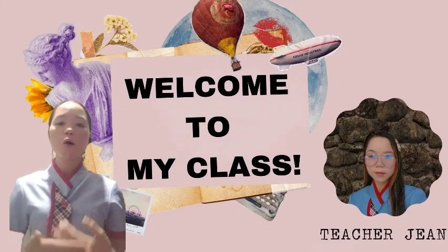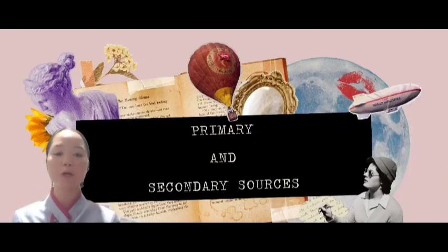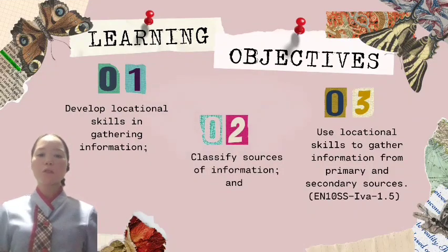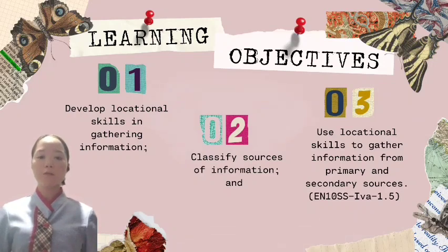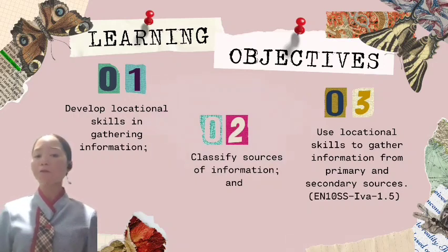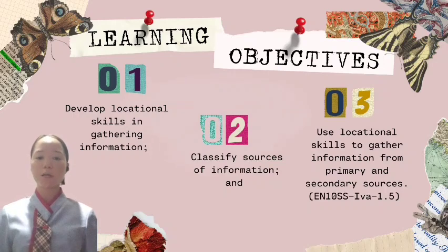For today's video, we will have a video lesson of Module 1, Quarter 2, in which we will tackle primary and secondary sources. But before we proceed to our discussion, let us have first our objectives. After completion of this module, you are expected to develop locational skills in gathering information, classify sources of information, and use locational skills to gather information from primary and secondary sources.